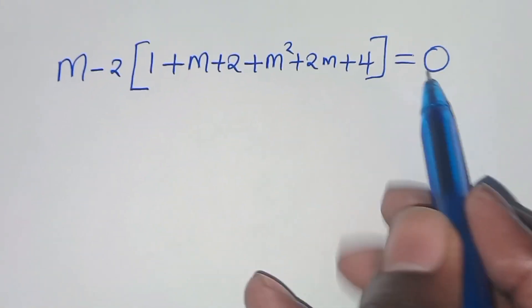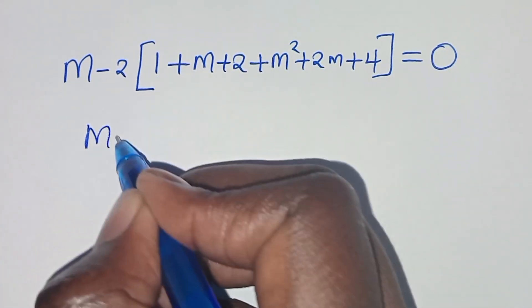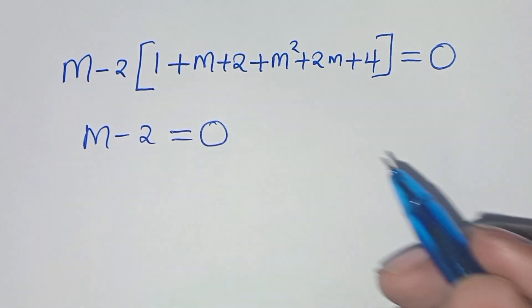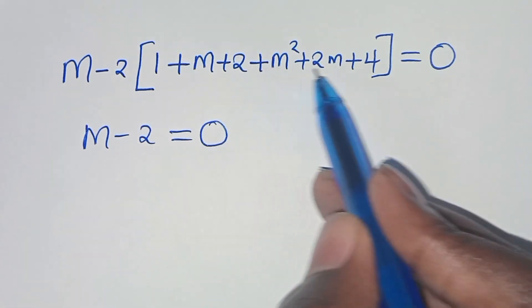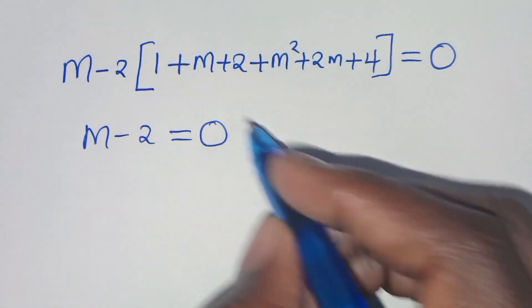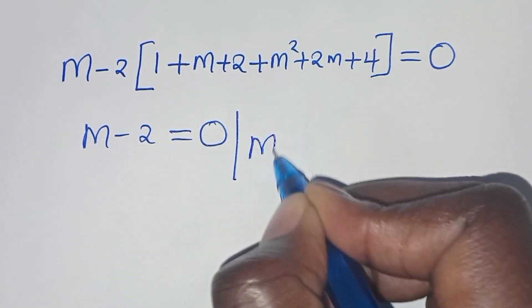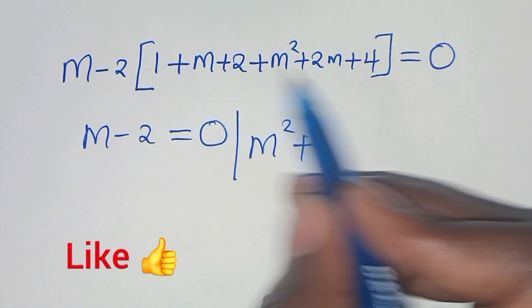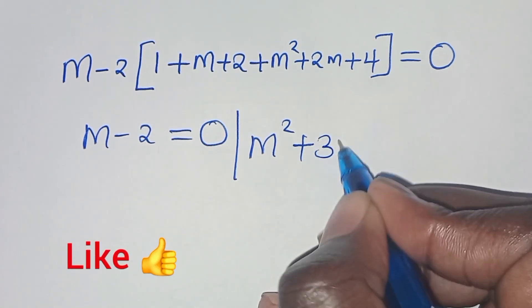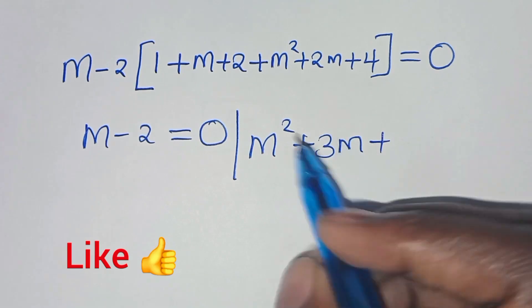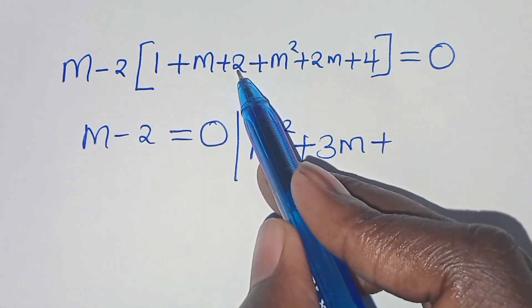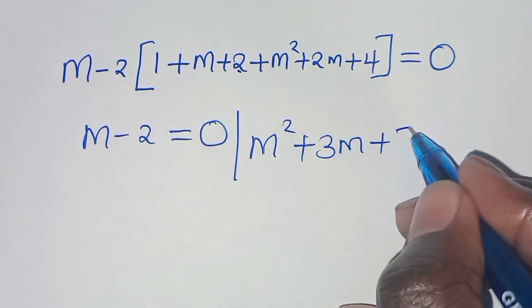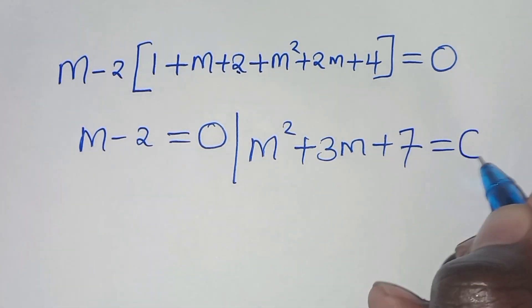We have two parts here. First part: (m minus 2) equals 0. Second part: the remaining bracket simplifies to m squared plus 3m plus 7, since 1 plus 2 is 3 and 1 plus 2 plus 4 gives 7. This equals 0.